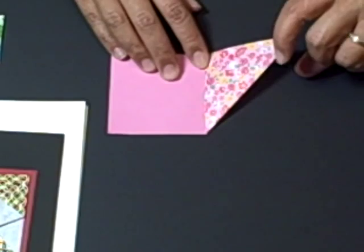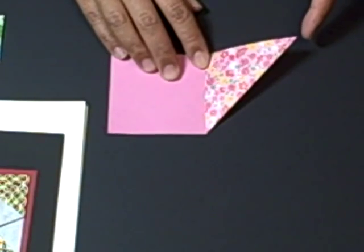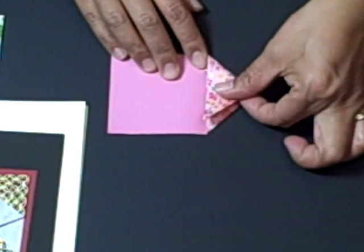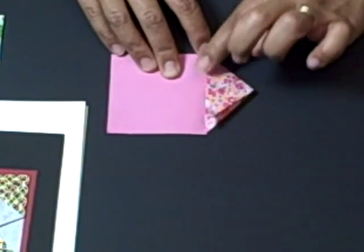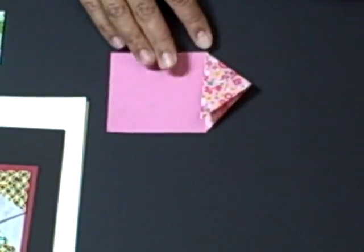On the same triangle side, take the bottom point and fold it up to meet the center line, the center crease you created at the very beginning.